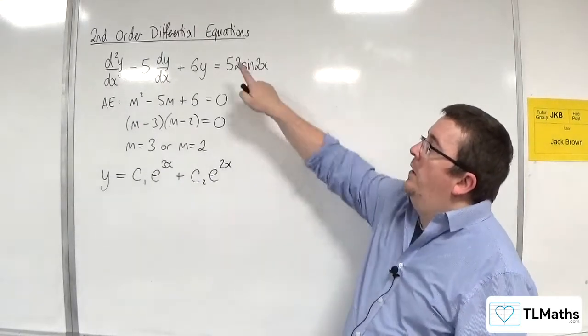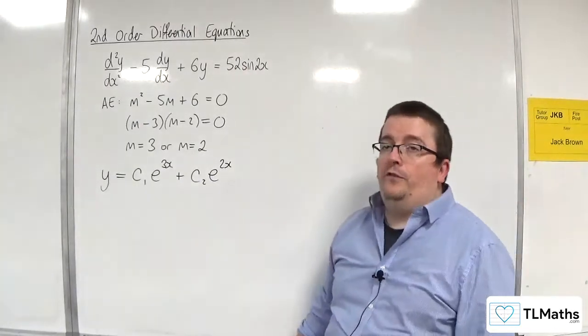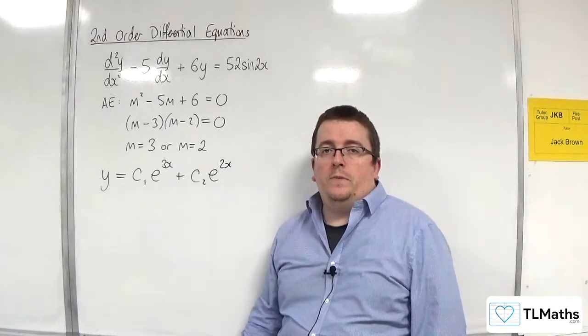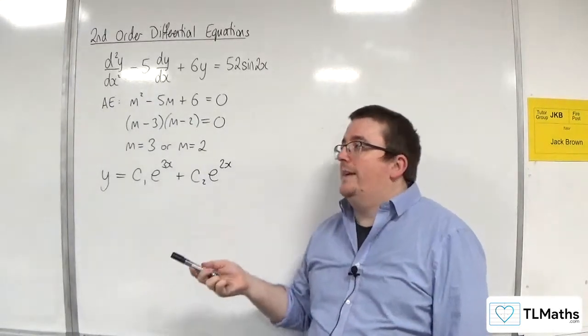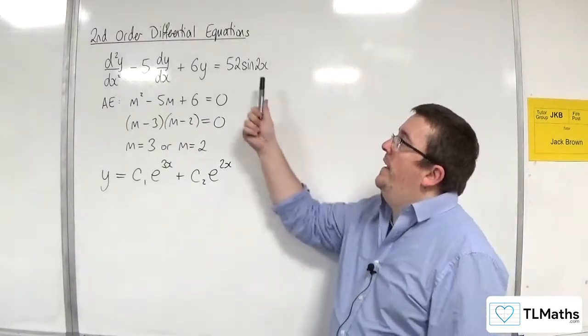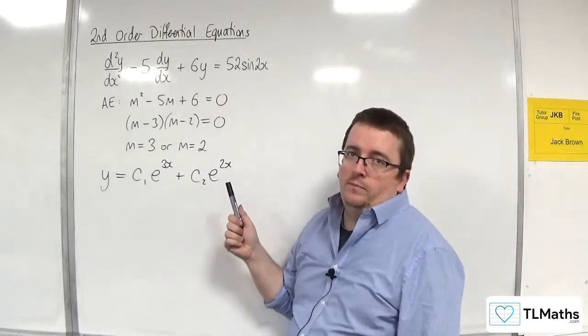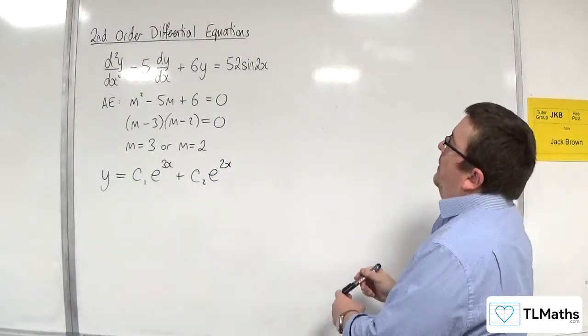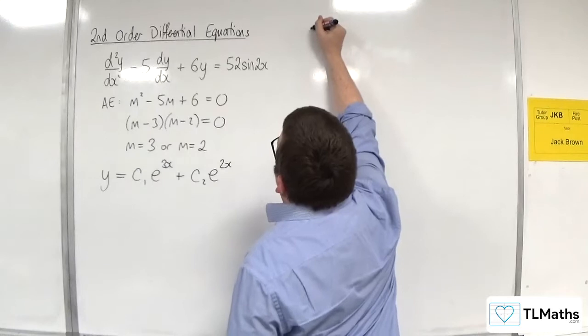So now, on our right-hand side, I've got 52 sine 2x. So now I want to find a test function that will allow me to get my particular integral for that f of x. Now, what should our test function be?